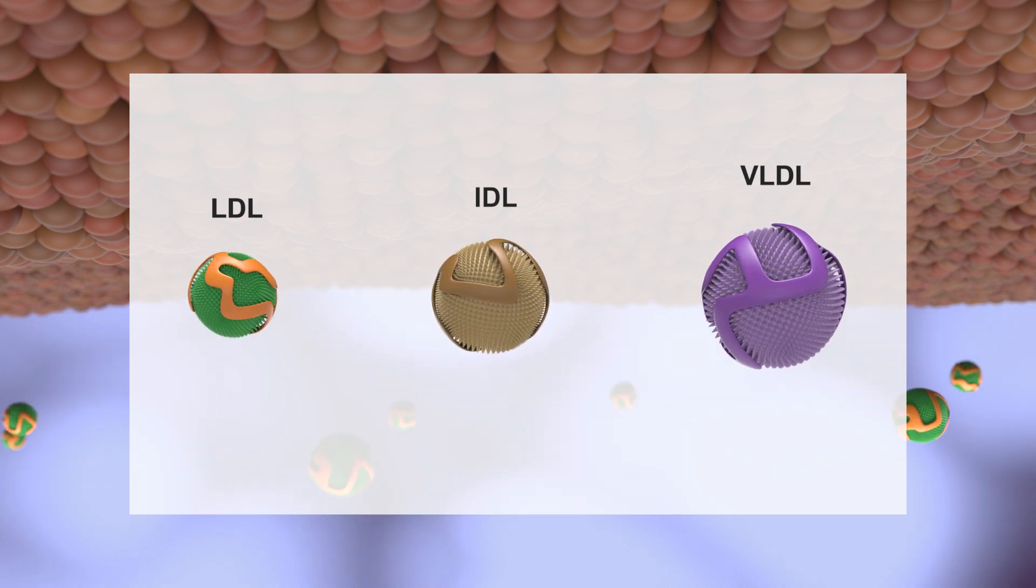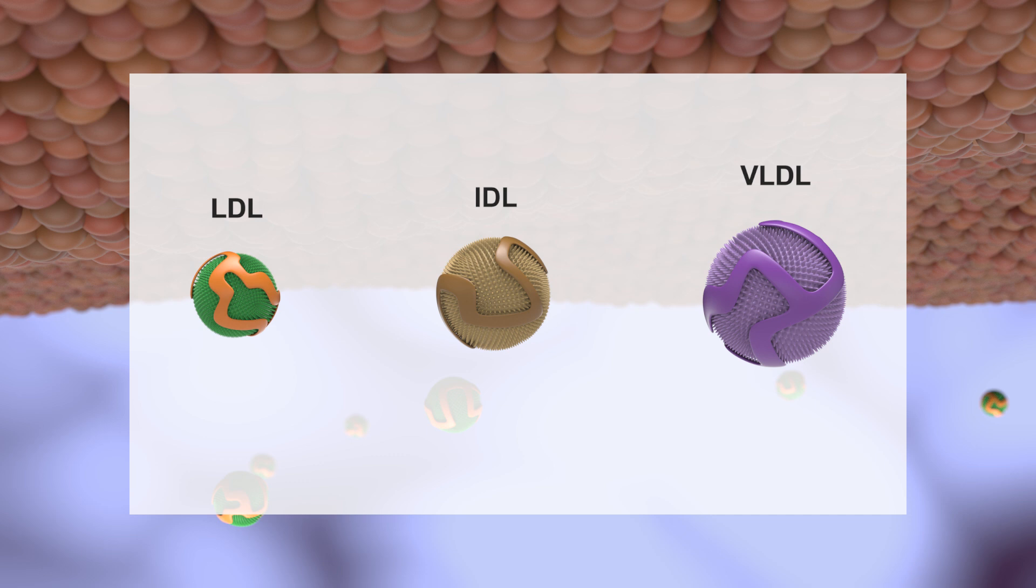The body generates and utilizes varying sizes and densities of lipoproteins. Less dense lipoproteins, like LDL, are atherogenic.